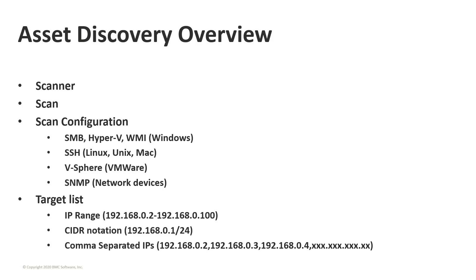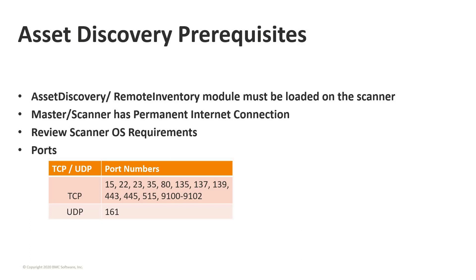These are some important prerequisites for the asset discovery module to function properly. The module is loaded by default whenever a new scanner is added into client management, and by default the master server is the first scanner with the asset discovery module loaded onto it. It must have a permanent internet connection, and there are certain operating system requirements reviewable in the documentation, along with important ports used for Windows, Mac, Linux, and network devices.